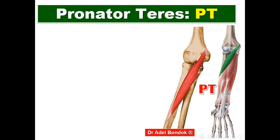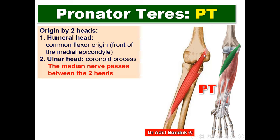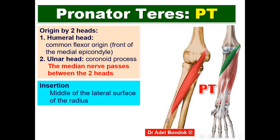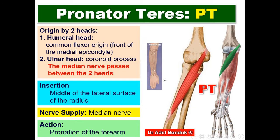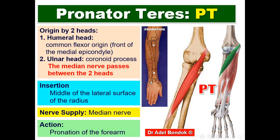Pronator teres forms the medial boundary of the cubital fossa. Regarding the origin, it arises by two heads: the humeral head from the common flexor origin — front of the medial epicondyle — and the ulnar head from the coronoid process of the ulna. The median nerve passes between the two heads, and the deep head separates the median nerve from the ulnar artery. It is inserted into the middle of the lateral surface of the radius. Nerve supply: the median nerve. Action: pronation of the forearm, or medial rotation of the forearm. The radius is the movable bone and the ulna is the fixed bone, so the radius crosses the ulna.